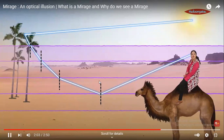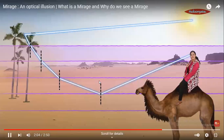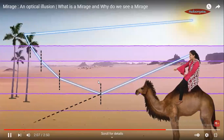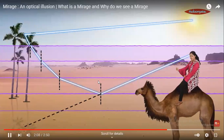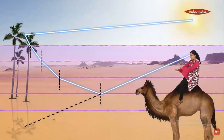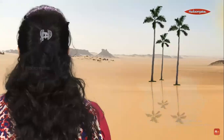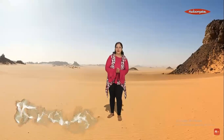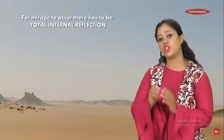Light always travels in a straight line. So you can see the reflection of the tree at the bottom, and similarly the reflection of the cloud is also seen there. That appears like water — and that is how a mirage takes place.